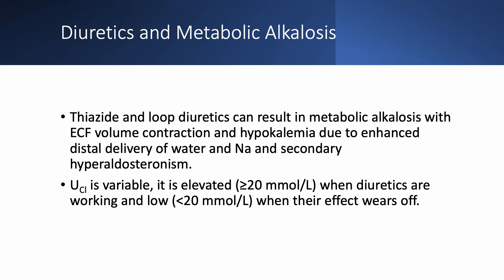Diuretics, especially when the patient is over-diuresed, are a very common cause of metabolic alkalosis. When you see rising serum CO2, consider lowering the diuretic dose as acute kidney injury and severe hypokalemia may follow. Both thiazide and loop diuretics cause metabolic alkalosis with extracellular volume contraction and hypokalemia due to increased distal delivery of water and sodium and secondary hyperaldosteronism. Urine chloride is variable: high while the diuretic is active, low when it wears off. Fluctuating urine chloride may indicate diuretic abuse.